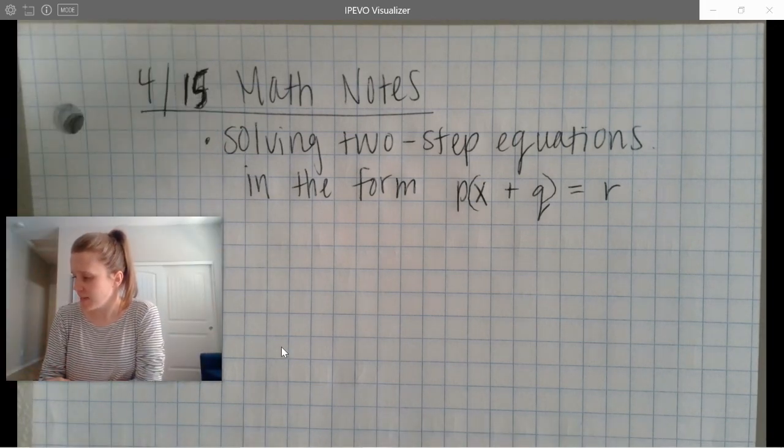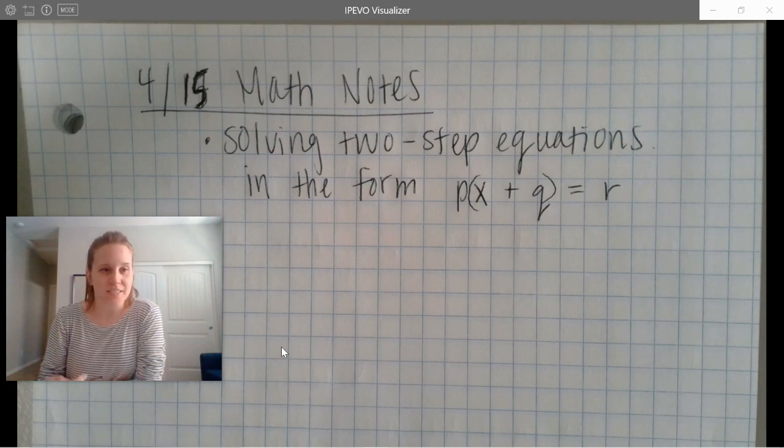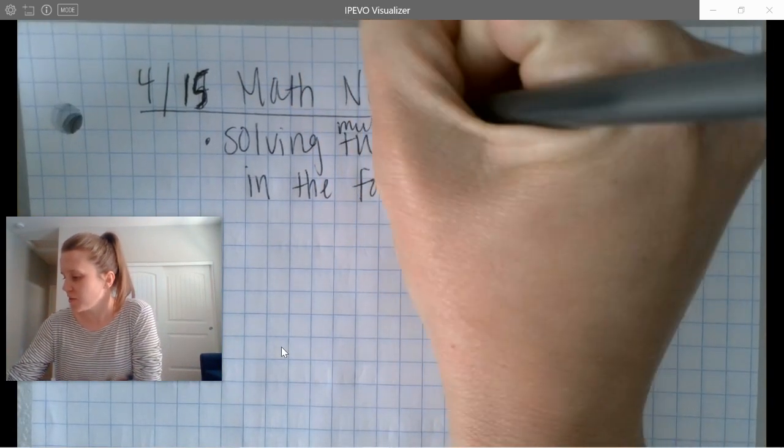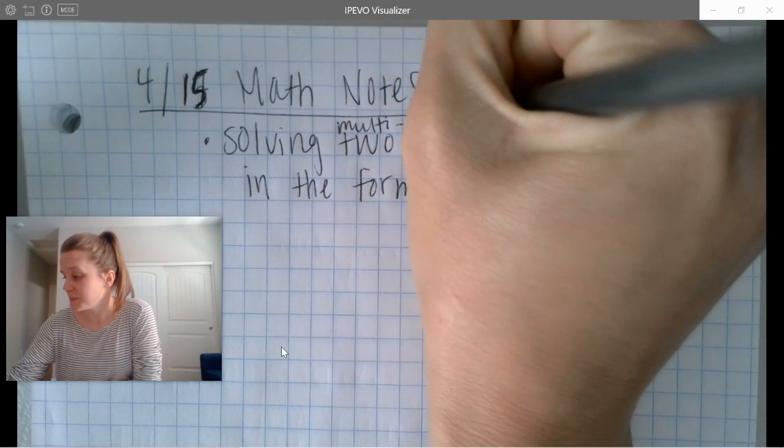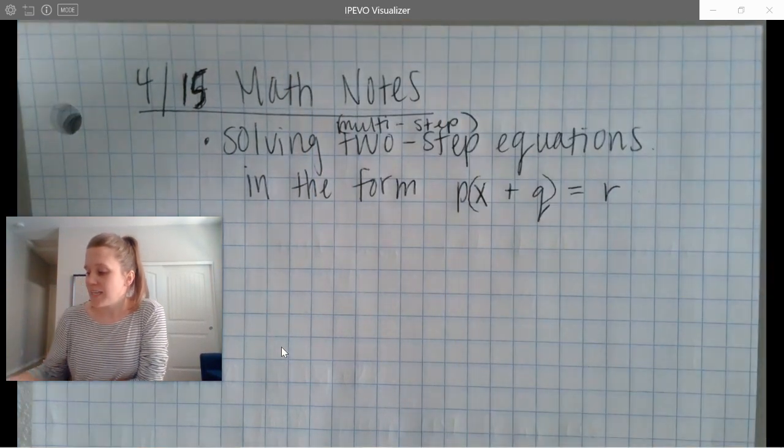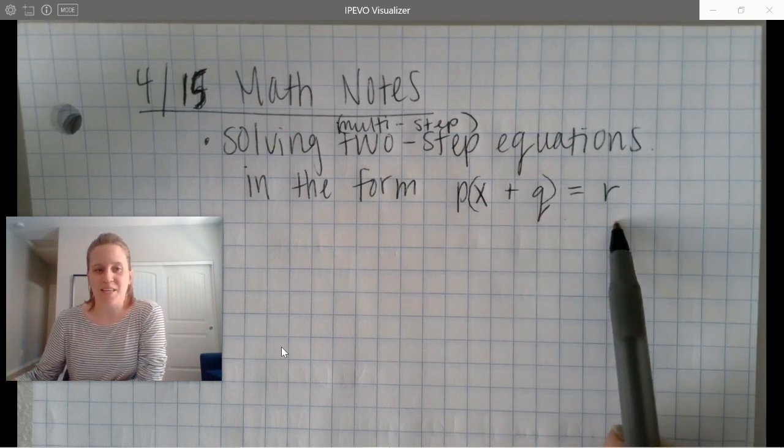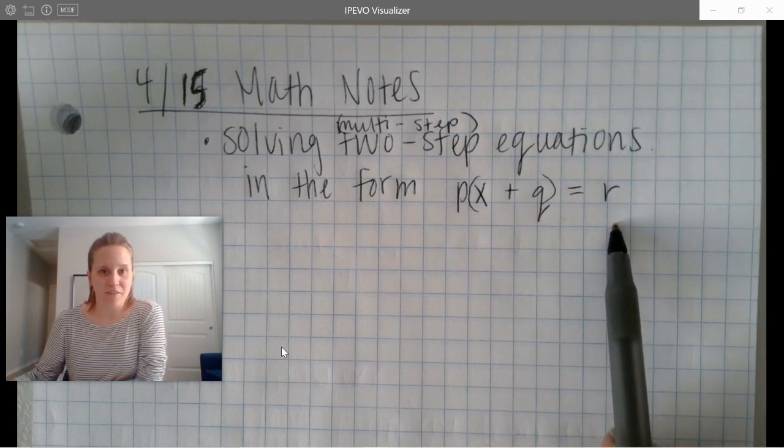Today we are solving two-step equations and sometimes they're actually multi-step equations. Sometimes they could be more than just two steps. In this form, P parentheses X plus Q equals R. Go ahead and make your notes look like this.